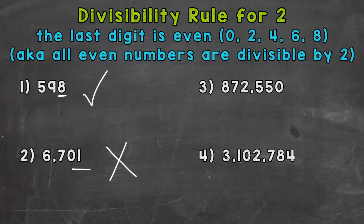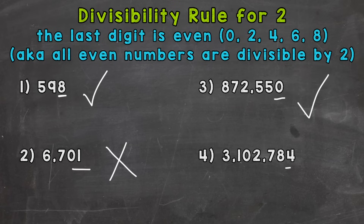Number 3, 872,550. That number ends in a 0, therefore it's an even number and divisible by 2. Lastly, we have 3,102,784. That number ends in a 4, that means it's an even number, therefore divisible by 2.